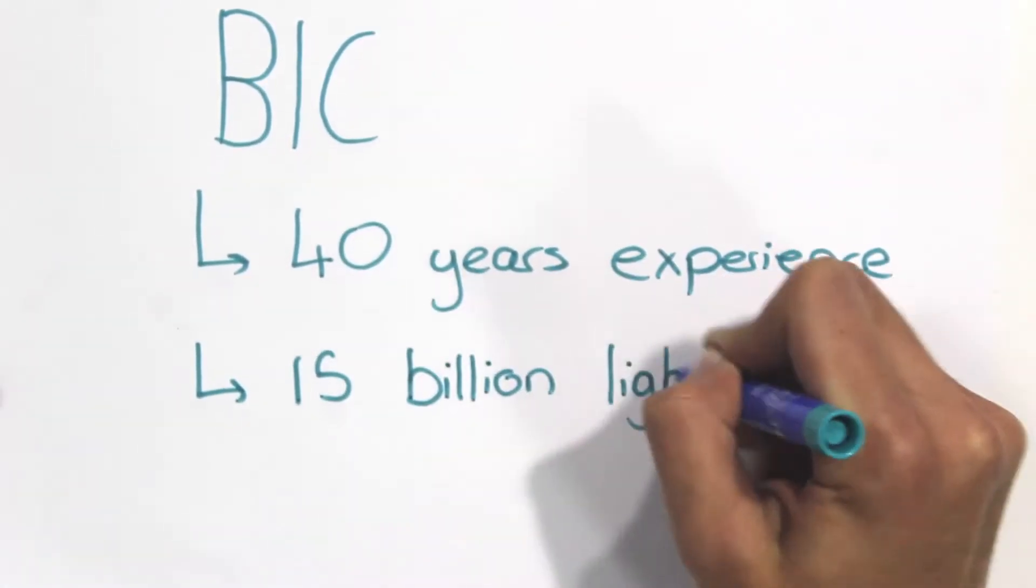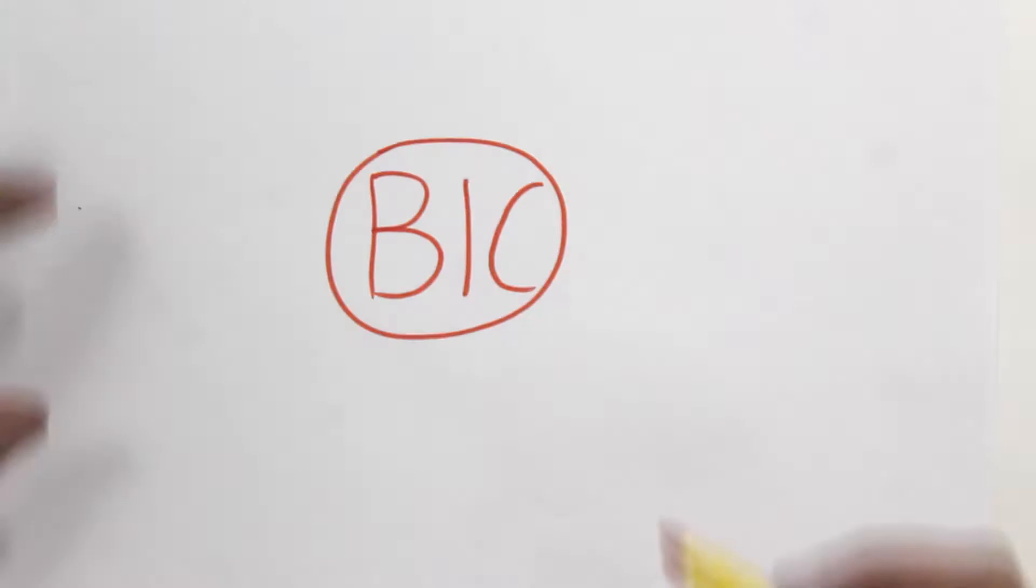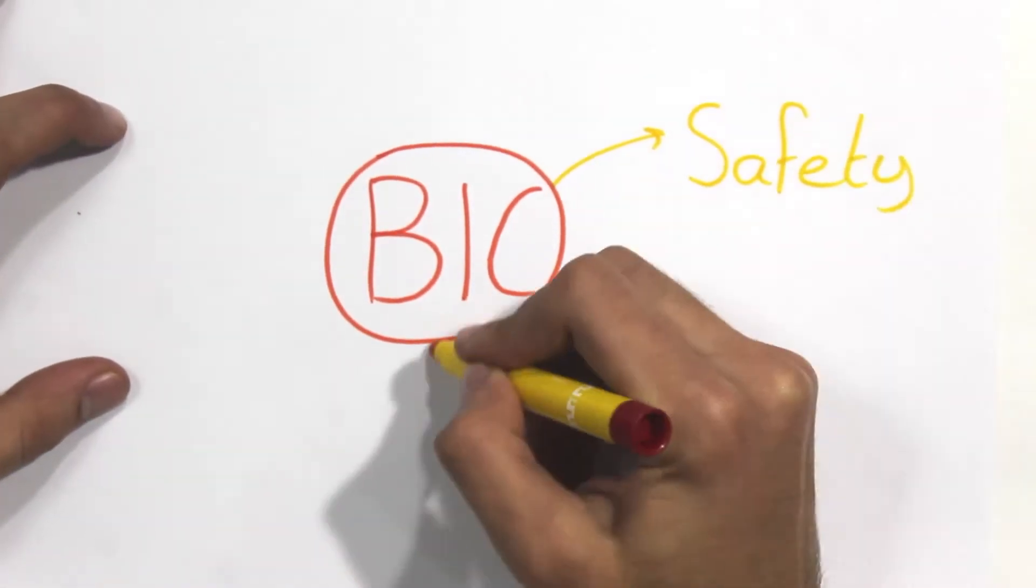BIC focuses their product on quality, safety, and accessibility. In this project, five main components of the BIC lighter will be discussed.